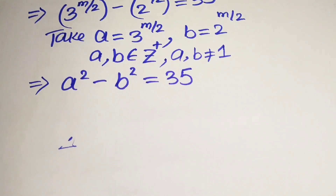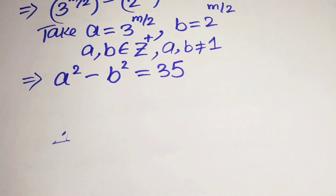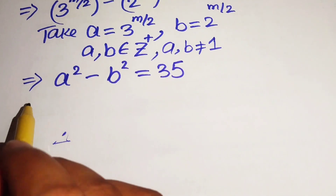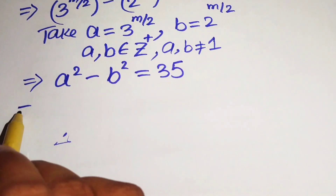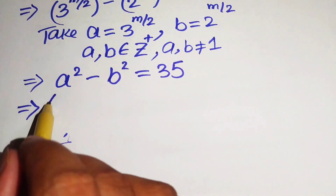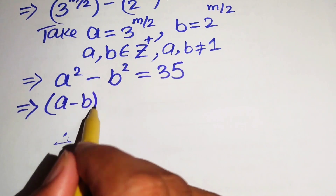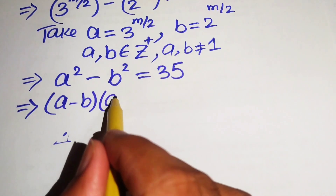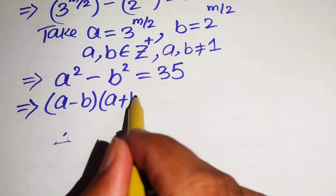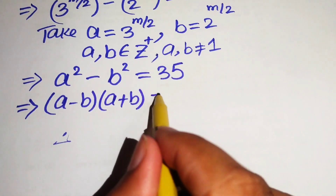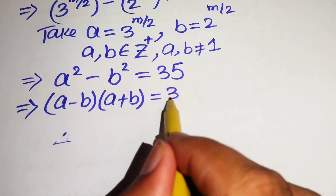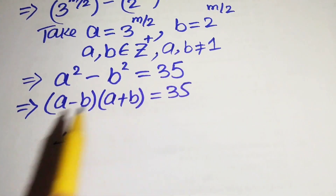This becomes the famous difference of squares identity: a squared minus b squared equals a minus b times a plus b, which equals 35.